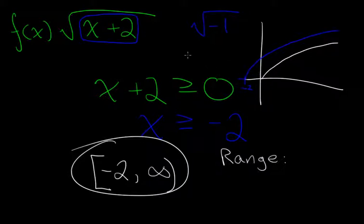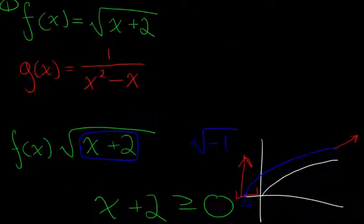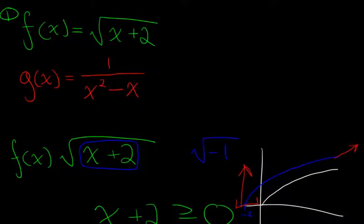So the range looks like it goes from 0 all the way to infinity. So the range is 0 to infinity, because it just keeps on going in a diagonal upward direction from 0, and then from negative two. So that's question one. Now question two.